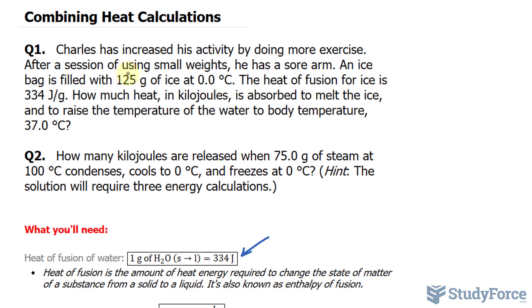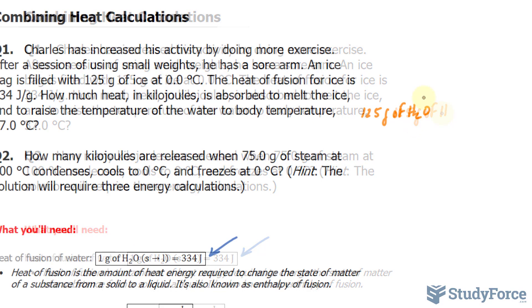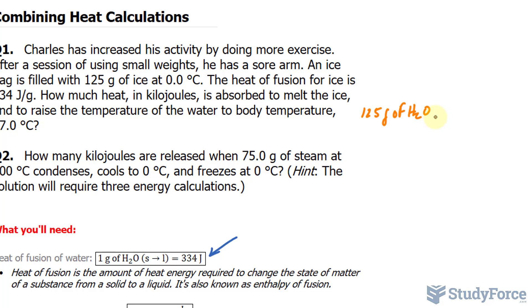The first thing that I want to do is find out how much energy is required to take 125 grams of ice into liquid. And for that, we'll be using heat of fusion, which is the constant for solid to liquid. So I'll take this number, 125 grams of ice, I'll write down H2O for convenience, and multiply that by this conversion ratio. I'll make sure that 1 gram is at the bottom, 1 gram of H2O, and at the top, 334 joules.